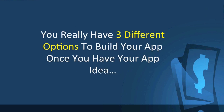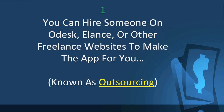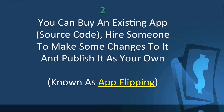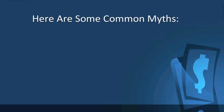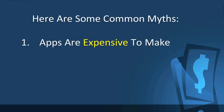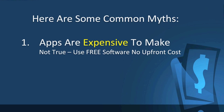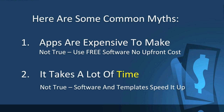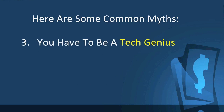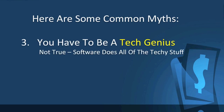How do you build apps quickly and cheaply? You have three different options once you have your app idea. You can hire someone on oDesk or Elance or other freelance websites — this is commonly known as outsourcing. You can buy an existing app or source code, hire someone to make changes, and publish it as your own — commonly known as app flipping. Or my favorite: you can make it yourself using free drag-and-drop software that does all the techie stuff for you. Common myths to bust: apps are NOT expensive to make — you can use free software. It does NOT take a lot of time. And you do NOT have to be a tech genius — the software handles all the technical work.